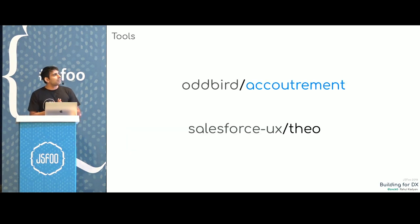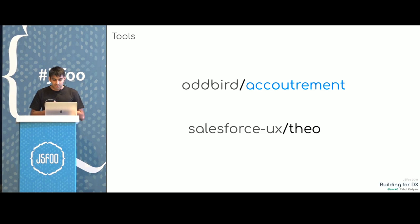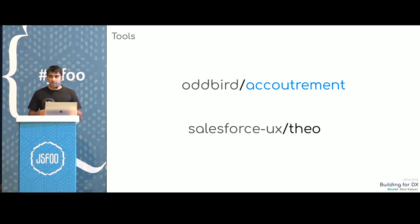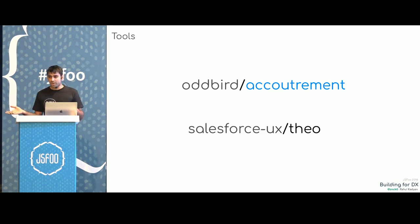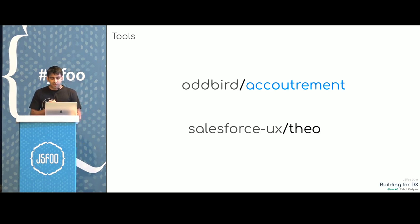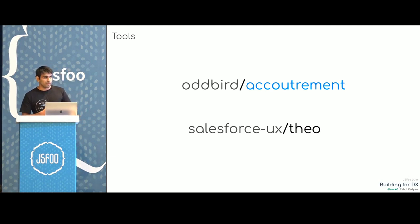Two tools worth highlighting: Accoutrement is a really nice tool if you are maintaining tokens in Sass. If you want to support multiple platforms and have centralized tokens, Theo by Salesforce is also nice — it allows you to put your tokens in YAML and export them to Sass, CSS, Android, iOS, Windows, basically everything. We preferred Accoutrement because we were building only for web and didn't want to introduce much complexity. So we picked Accoutrement, and now we have a basis for our communication — we have tokens.